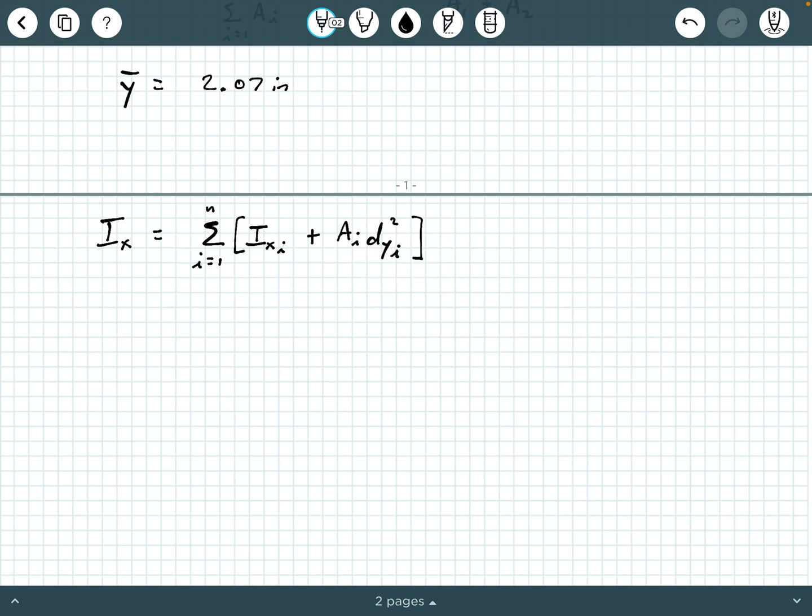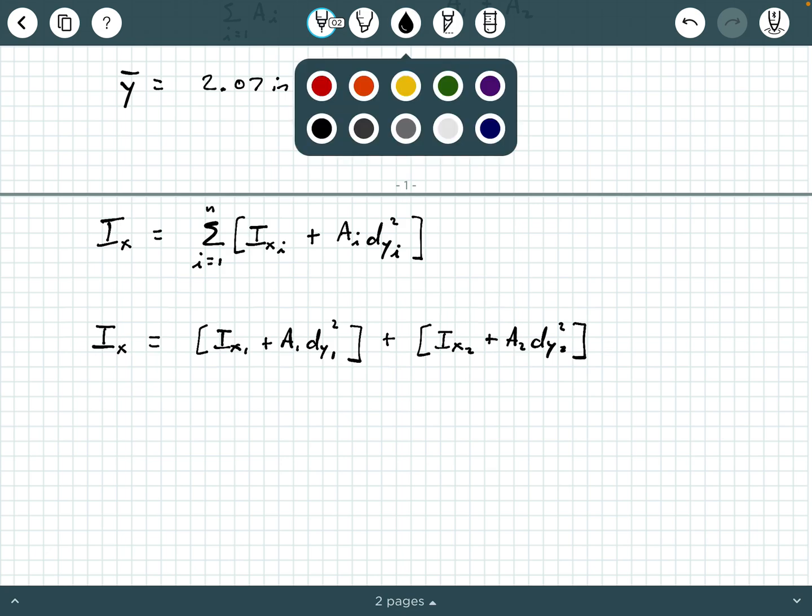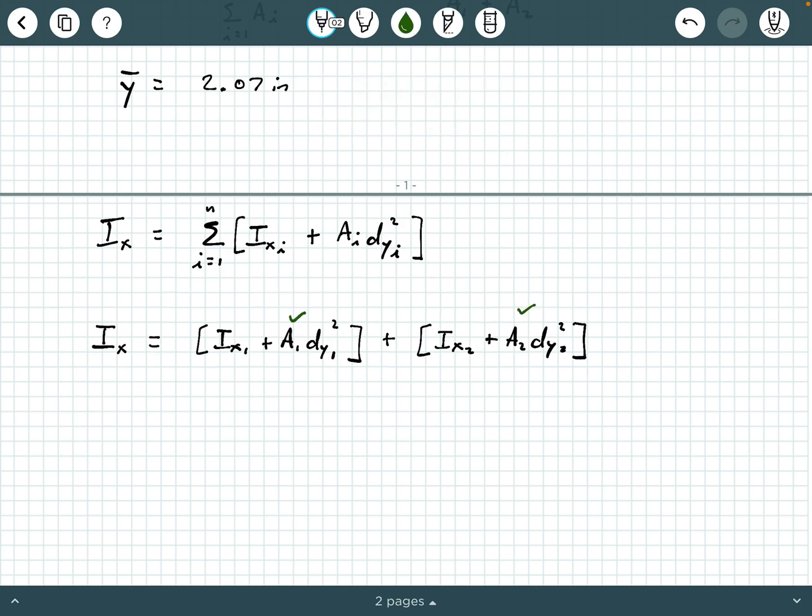Now, we can expand this because we know we have two pieces. We could say this is I X 1 plus A 1 D Y 1 squared plus I X sub 2 plus A 2 D Y 2 squared. Now, here's the great thing. We already have A 1 and A 2, so we can check A 1 and A 2 off. That was 6 square inches and then 8 square inches. So the next thing we need is I sub X 1 and I sub X 2, and we also need D sub Y 1 and D sub Y 2. So how about we get these one part at a time.